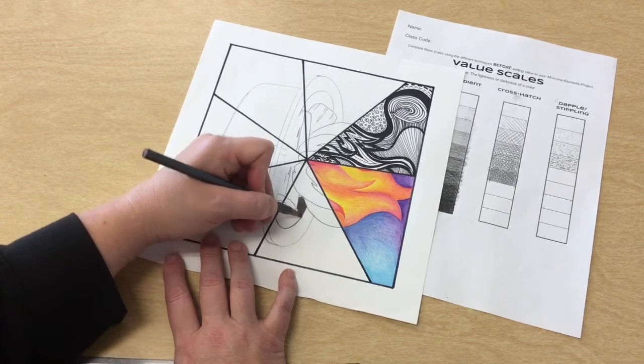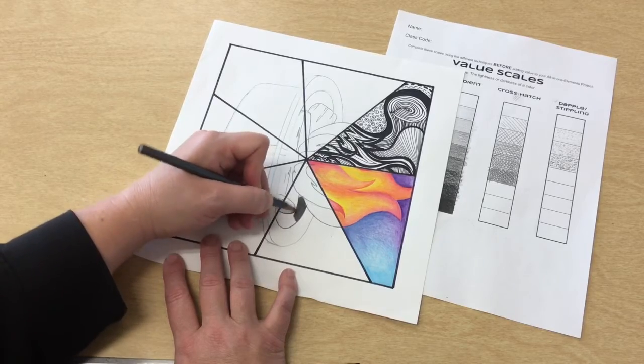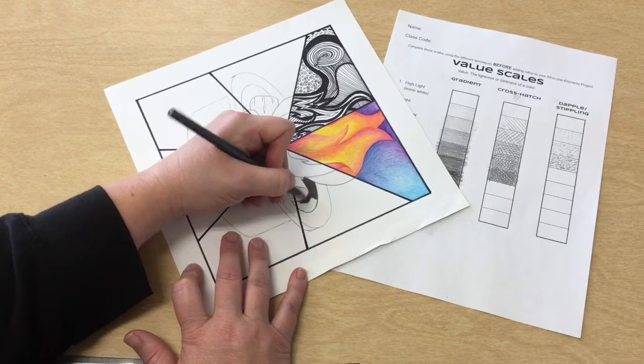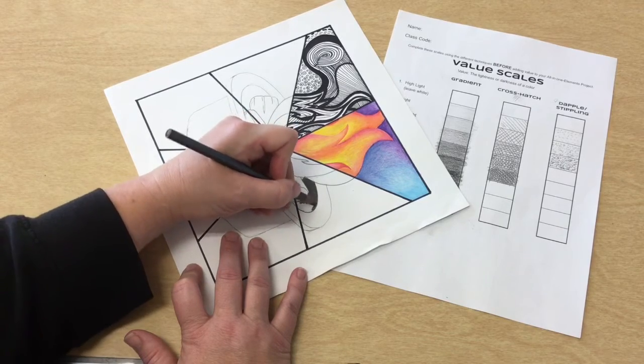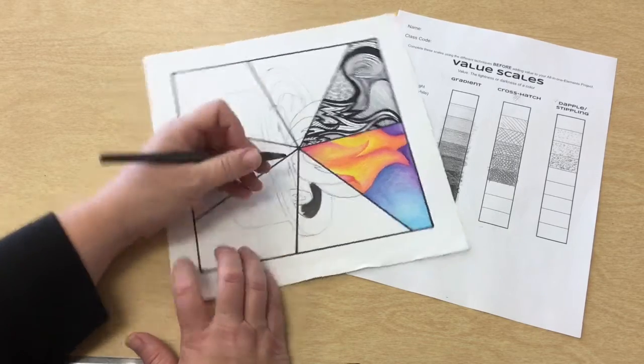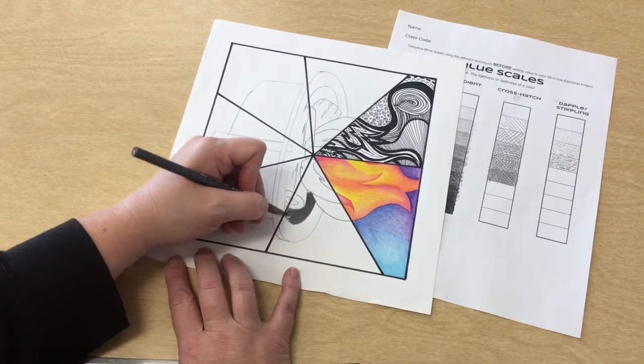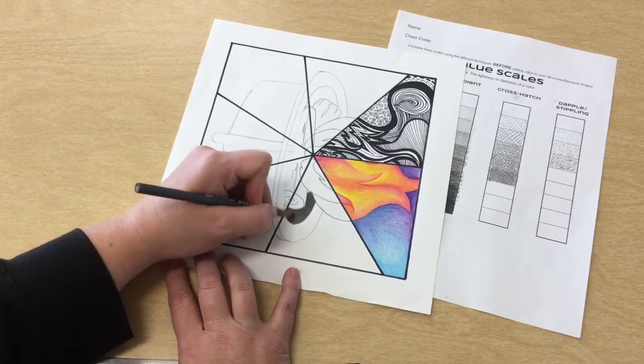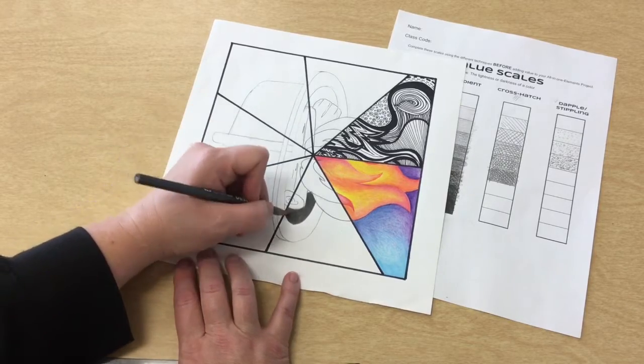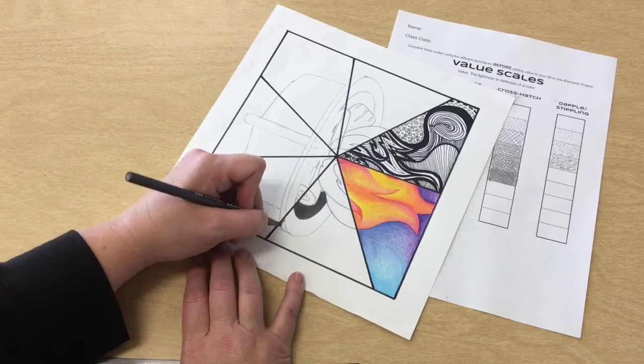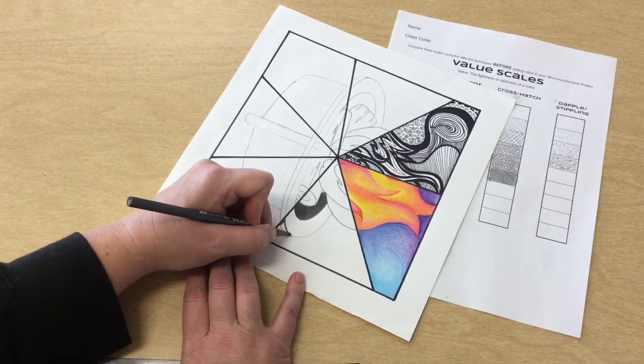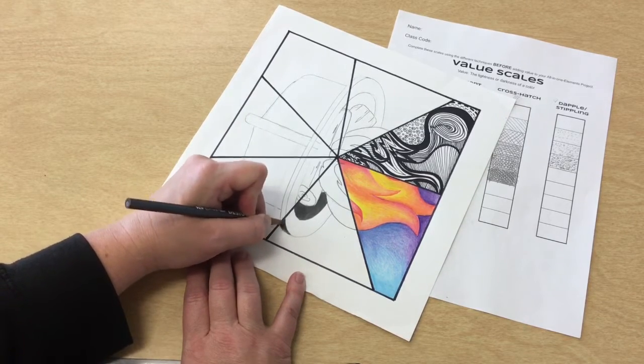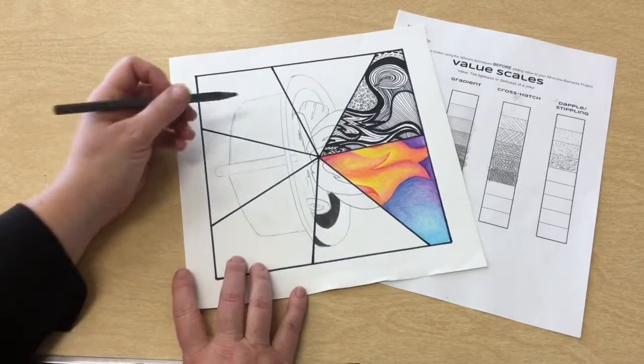And then I want to think about where else I want to have some dark things because these really dark areas help bring out the design, that contrast. We need that contrast when we're adding value. We're not just coloring it with pencil, we're thinking about pressure, we're thinking about light reflecting off of things.